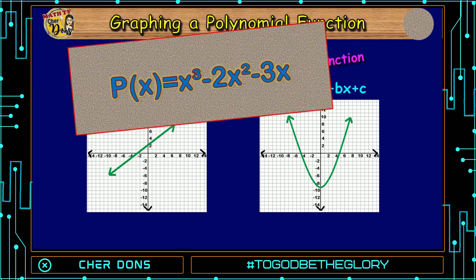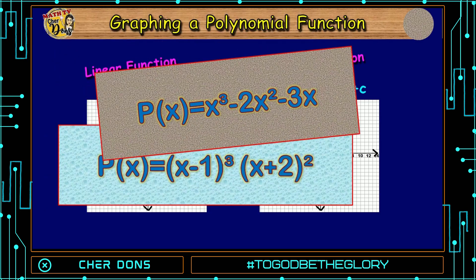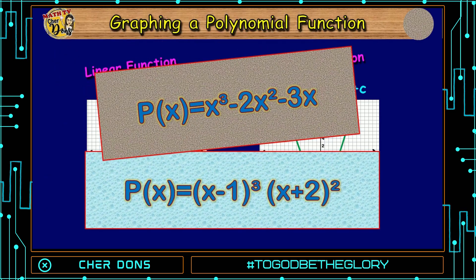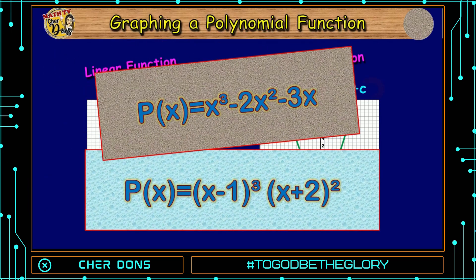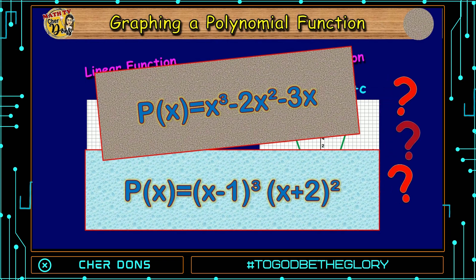A quadratic function has a parabola as its graph. How about this one? Or this one? They are polynomial functions of a degree higher than 2. How can we sketch their graph?